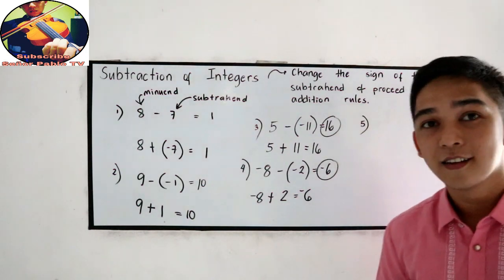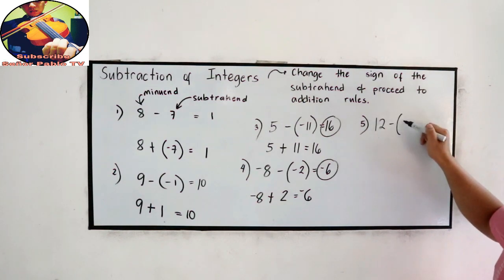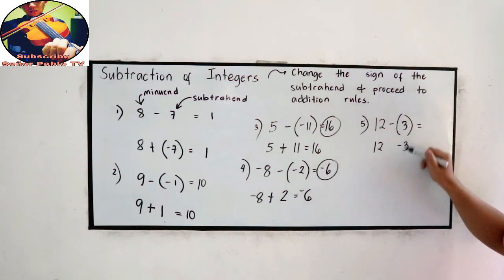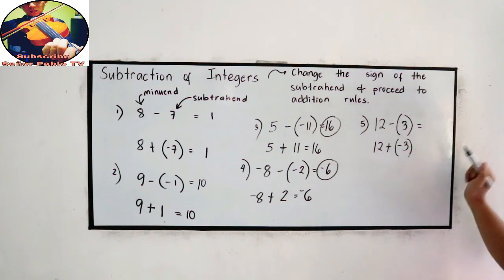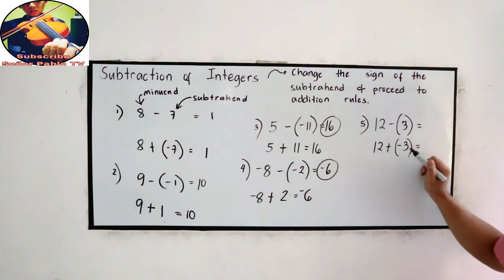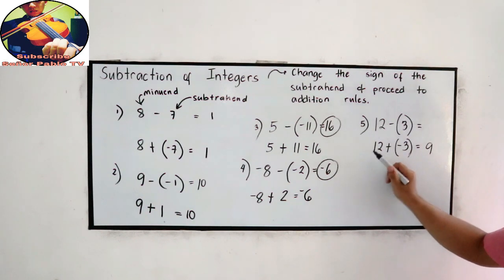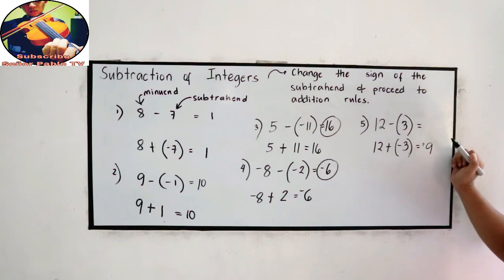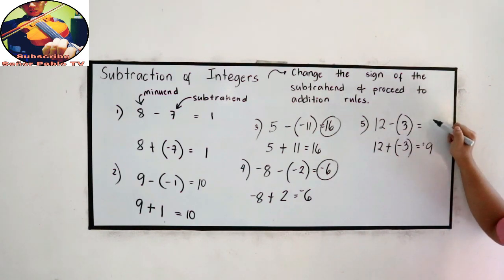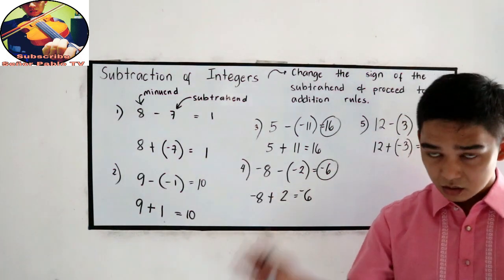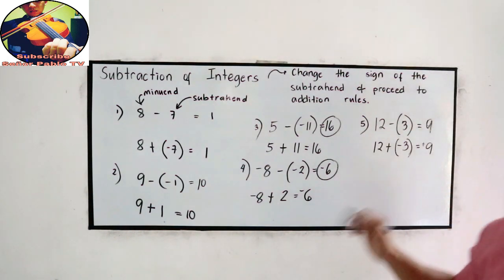Number 5: 12 minus 3. Copy the minuend — 12. Change the sign of 3 — minus becomes negative 3. Then change to addition. So that is 12 minus 3, which is 9. The greater absolute value is 12, so that is positive 9. And this is also 12 minus 3 in elementary math — that's 9. If you can solve it mentally, or if our rule gives the same result as elementary math, don't hesitate to answer.